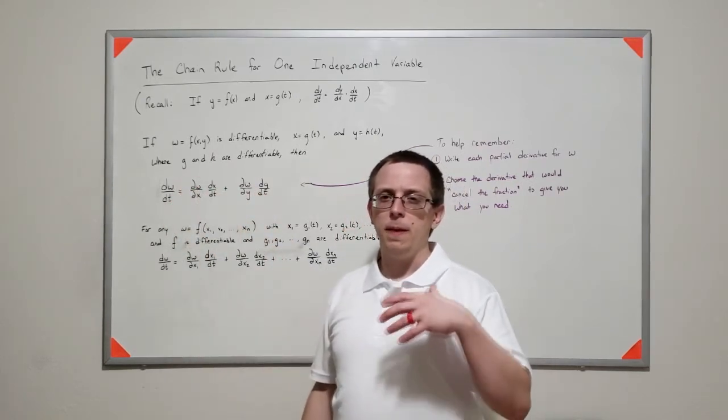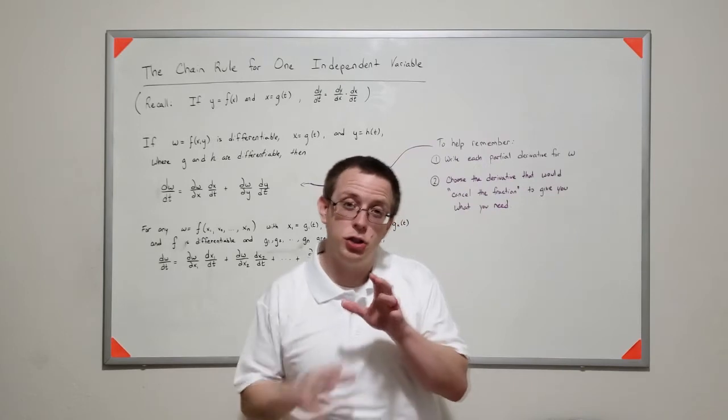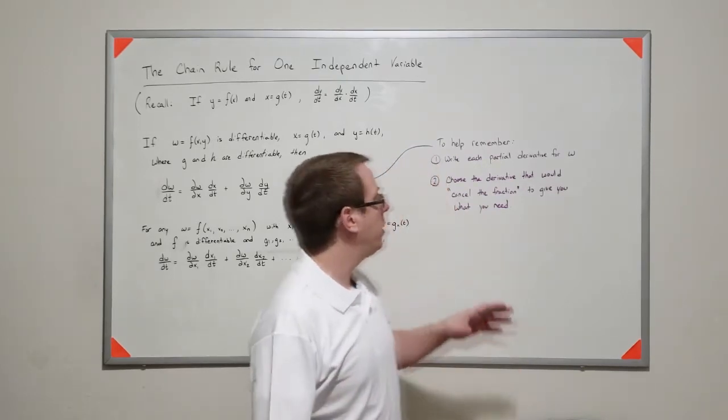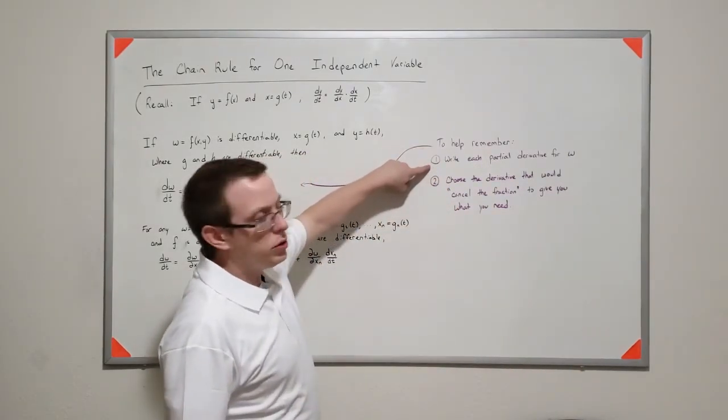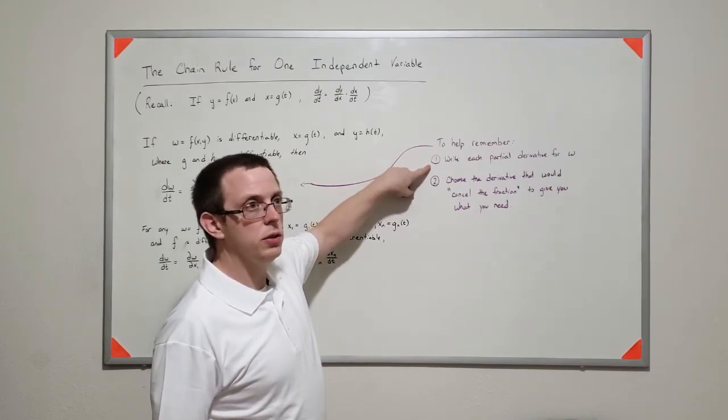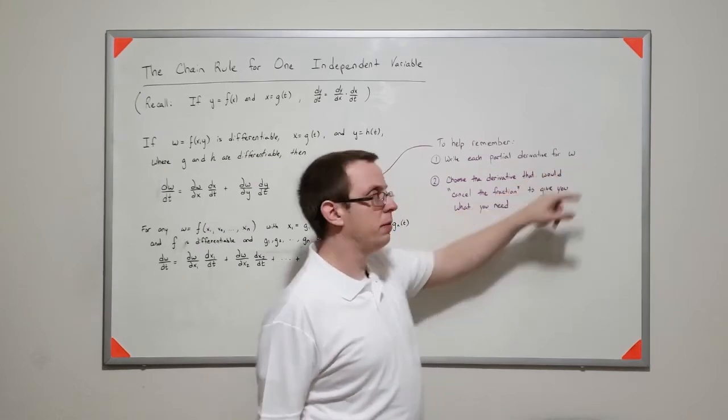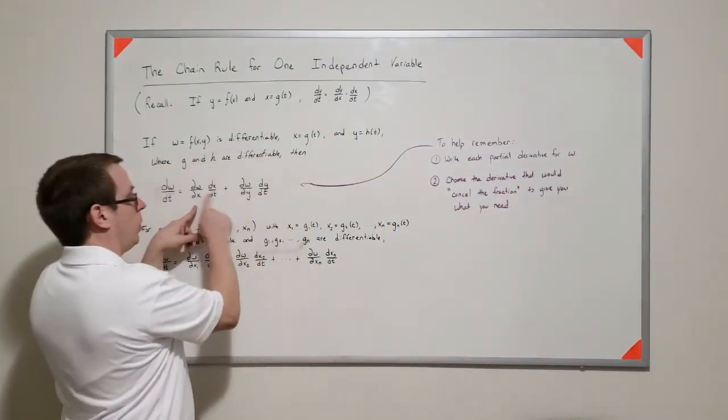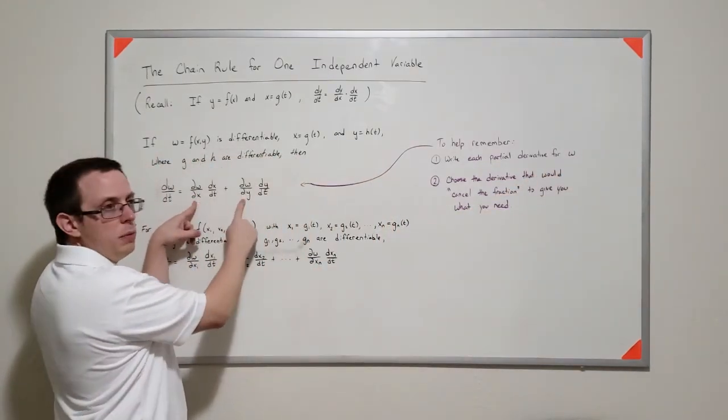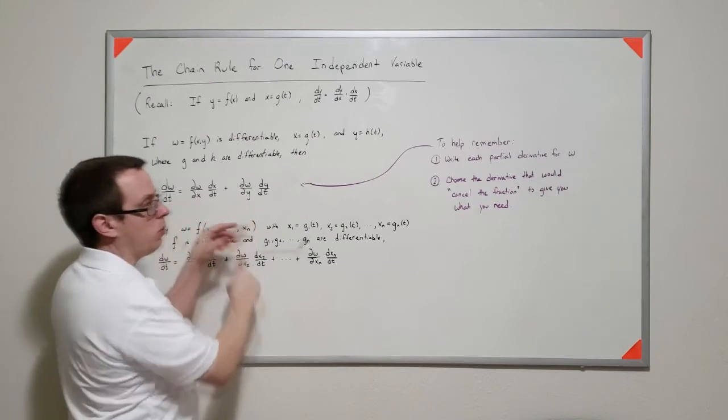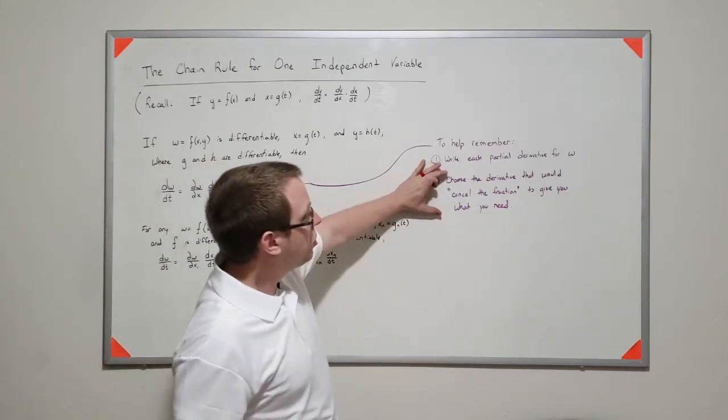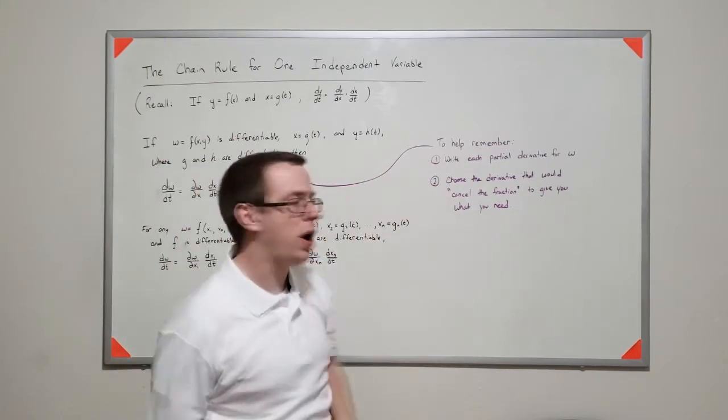So the sort of shorthand way, the kind of cheap, cheaty way to think about it, is to find the derivative for w, you write out each partial derivative. So in this case, partial with respect to x and partial with respect to y. And then you choose this derivative that will cancel the fraction.